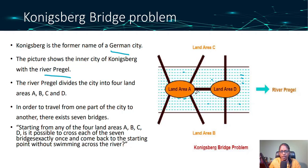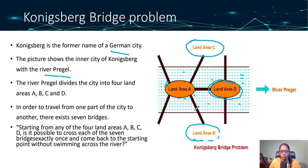The land areas are A, B, C, and D. In order to travel from one part of the city to another, there exist seven bridges.